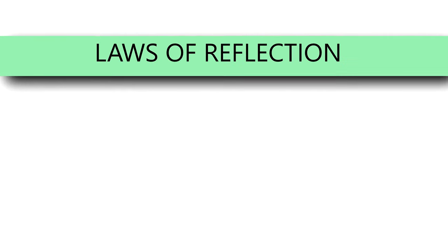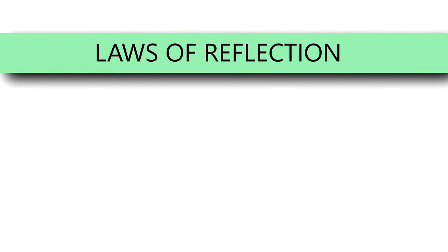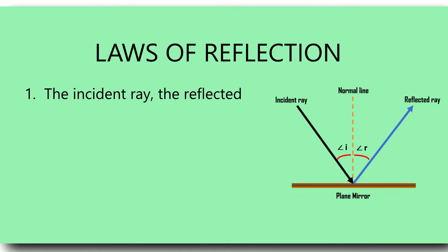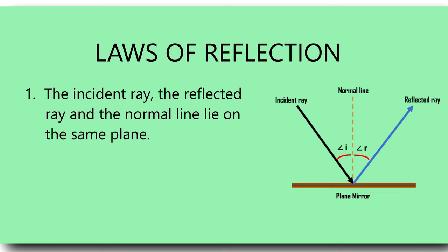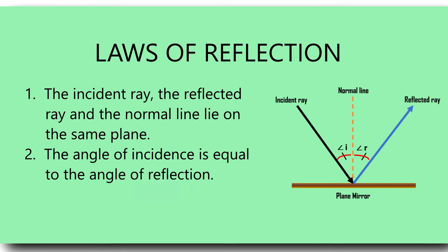Now we discussed the laws of reflection. How do we compare the angle of incidence and the angle of reflection? The laws of reflection state that the incident ray, the reflected ray, and the normal line lie on the same plane, and the angle of incidence is equal to the angle of reflection.